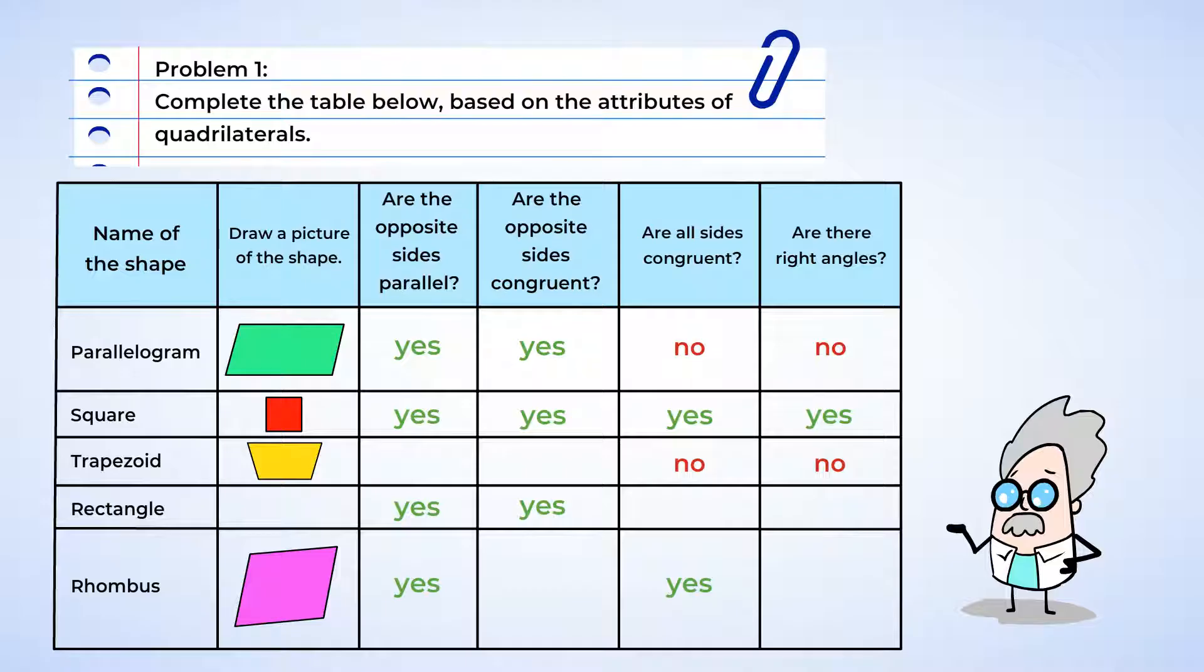The top and bottom are, but the sides are NOT. So we can mark here both YES and NO. And the opposite sides are NOT congruent. We can see that the top and the bottom are different lengths.